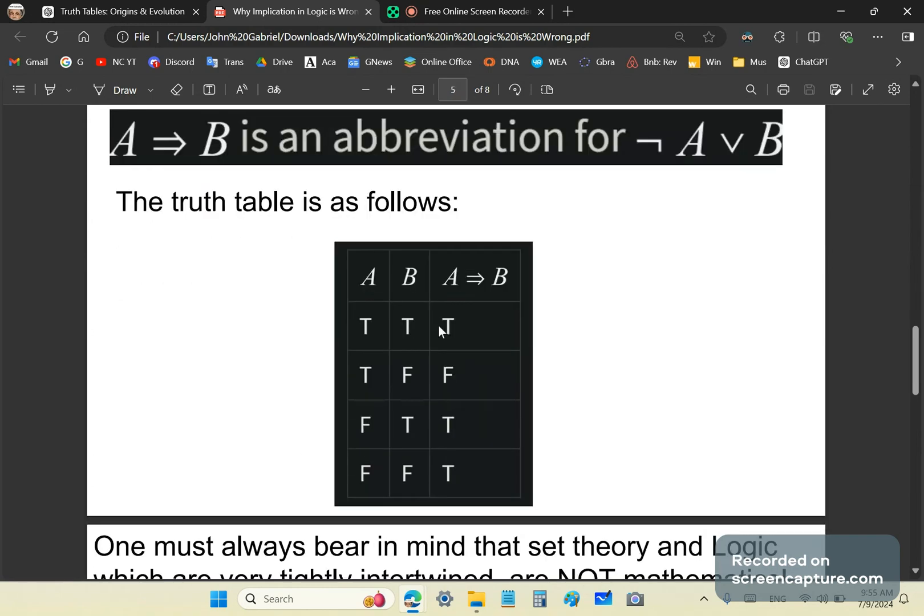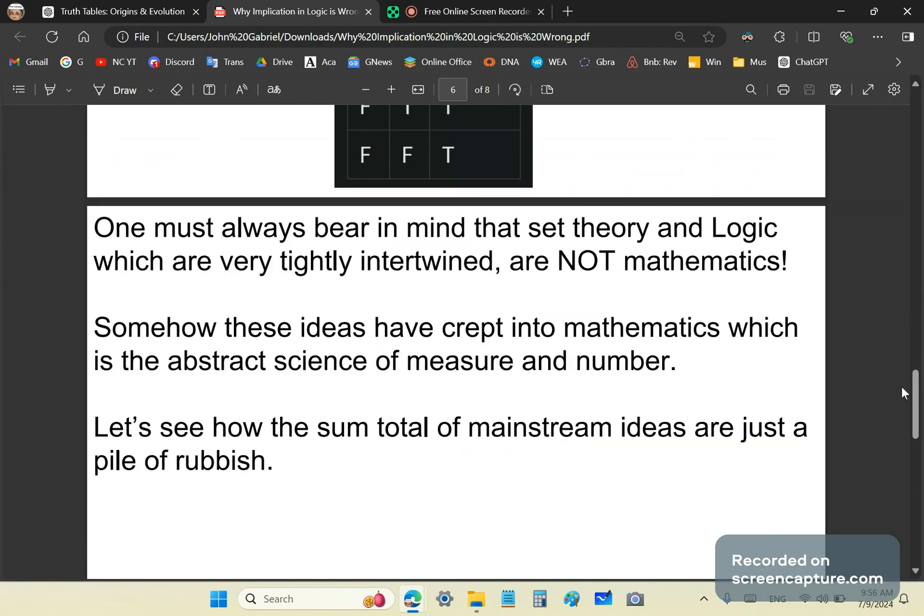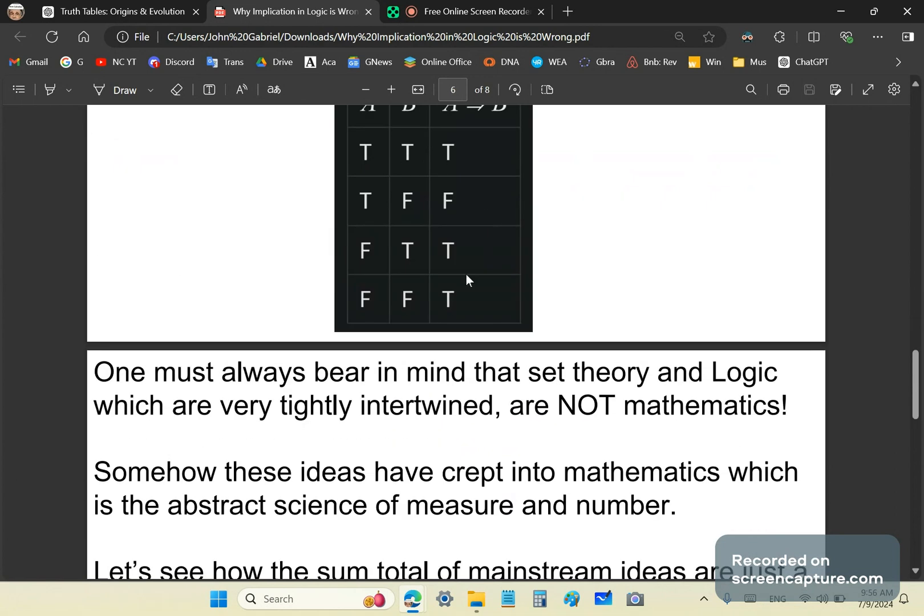Then the truth table for implies is stated simply as follows: if you have propositions A and B, then not A or B is the implication table. One particularly false or confusing combination of these inputs is when we have both A and B false, and A implies B turns out to be true. And I'll get to that in a moment.